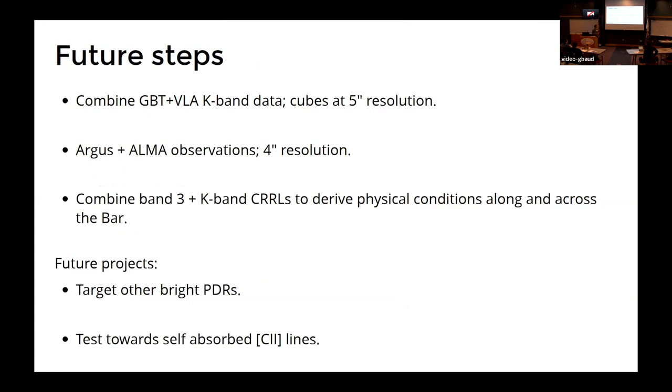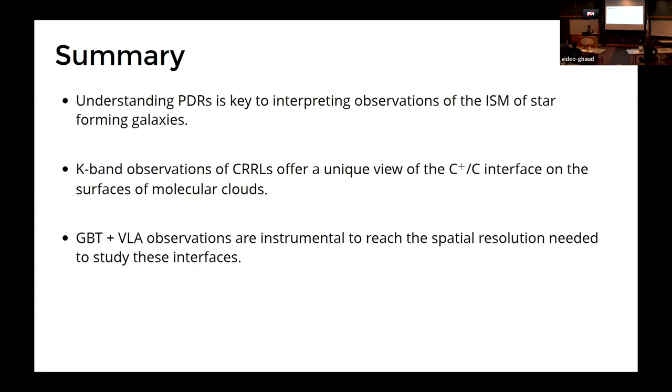There might be other things. We'd like to target regions where we see C+ in self-absorption because the recombination lines are optically thin. They wouldn't be affected by this. So you can actually probe those regions better. And I'll leave the summary up and end there. Thank you.